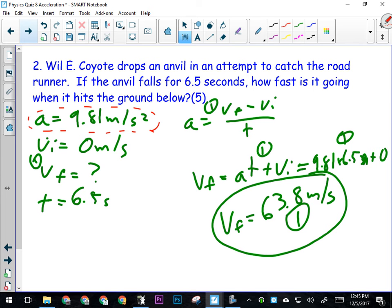The other thing is that he drops it. And what speed do we start at if something is dropped? Zero. Okay, so there's two pieces of information that aren't outright given to you, but are still kind of given to you in the question. All right, so give them a mark for givens.